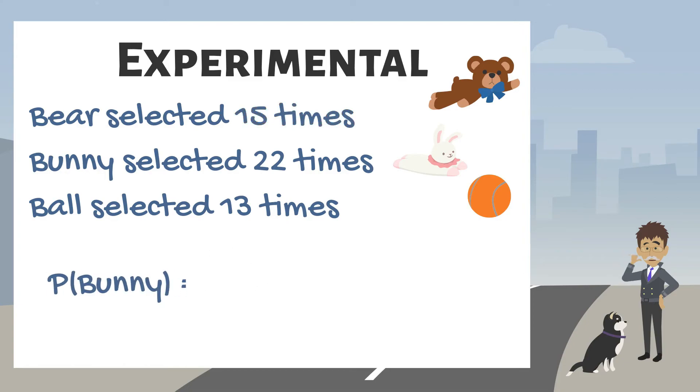Next, the bunny was selected 22 times to give the ratio 22 over 50 or a probability of 44 hundredths. Finally, for her ball, the ratio is 13 over 50. The experimental probability is 26 hundredths or 26%.